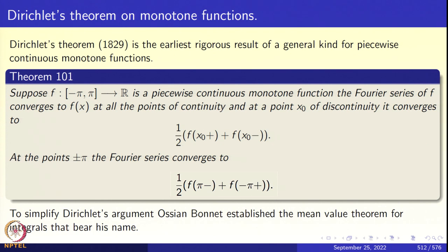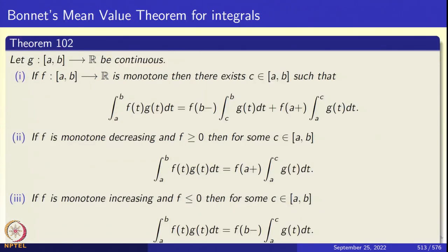The theorem is clearly stated in the slide as Theorem 1.1. We have to prove this theorem and we started preparing for its proof, using a result of Bonnet — Bonnet's mean value theorem for integrals. This was discovered by Ossian Bonnet to simplify Dirichlet's theorem. We are going to prove Bonnet's theorem today.